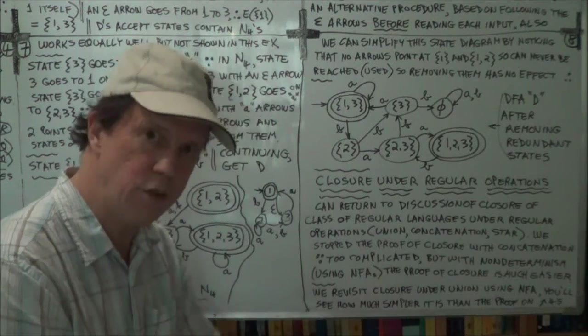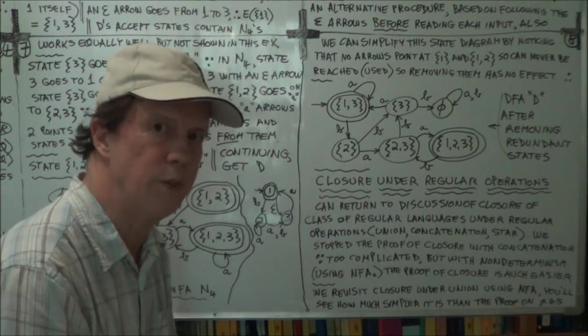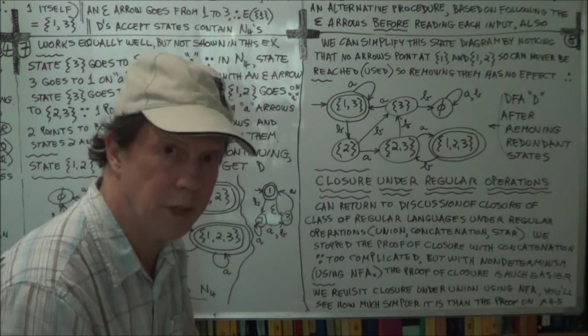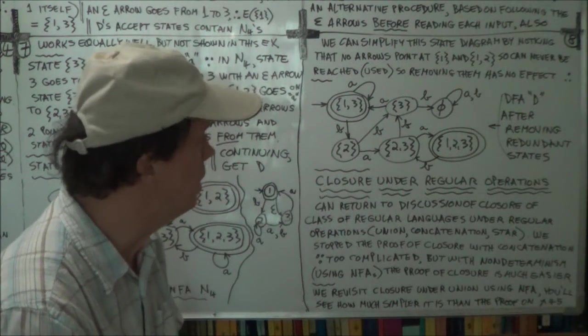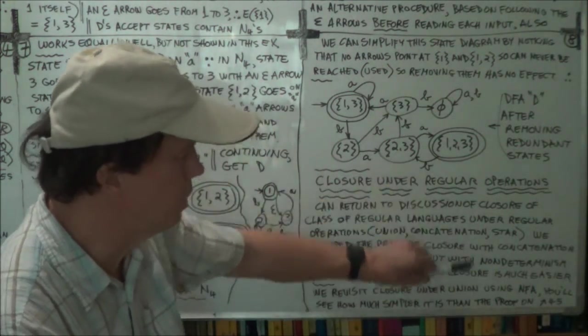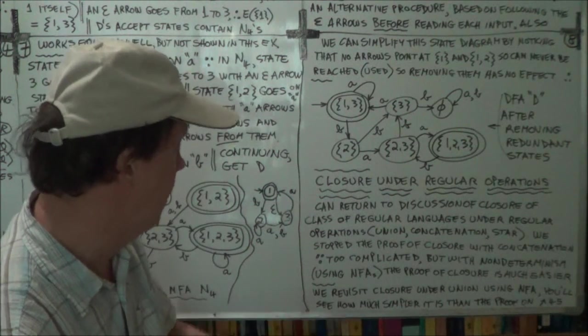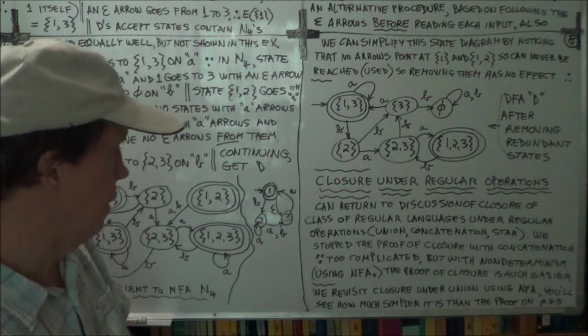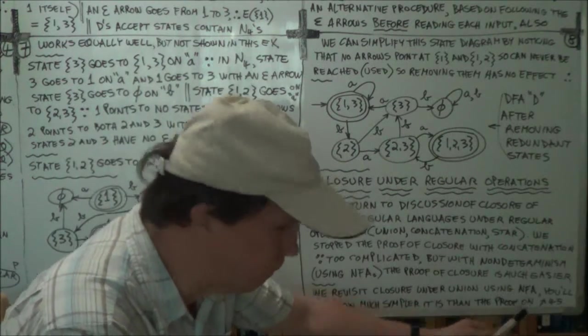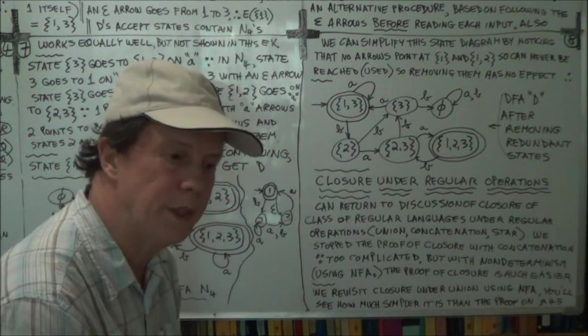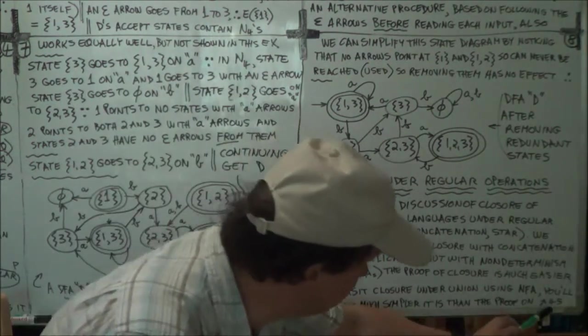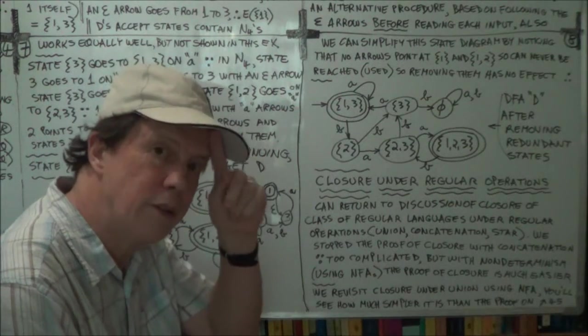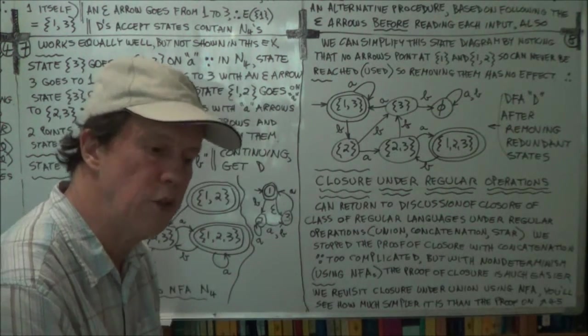And then we'll go on again using NFAs, using non-determinism, we will show that the regular languages are closed also under star, regular operation star. Okay. So we're just starting on that, right? Yeah, so let's see. So the proof that the regular language was closed under union, that was on page 45 of your text.